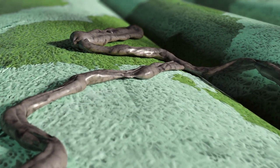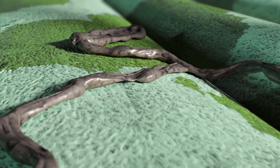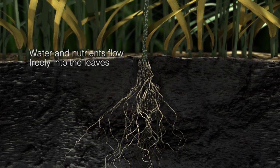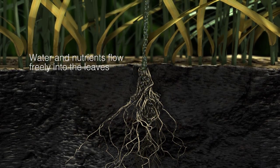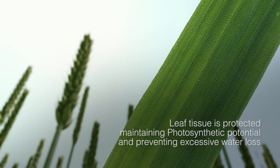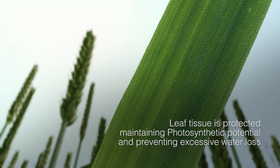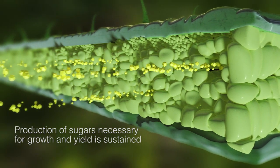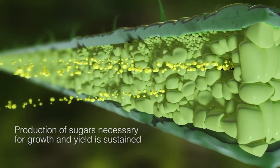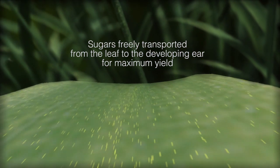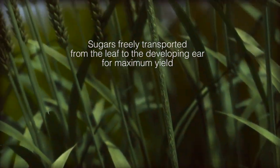By preventing the disease developing before it can cause damage, the water and nutrients can flow freely into the leaves. Leaf tissue is protected, maintaining photosynthetic potential and preventing excessive water loss. The production of sugars necessary for growth and yield is sustained, and sugars can be freely transported from the leaf to the developing ear for maximum yield.